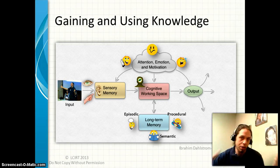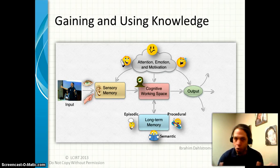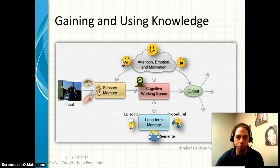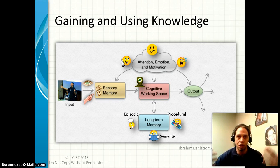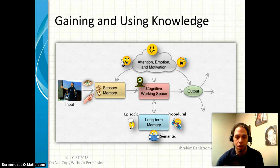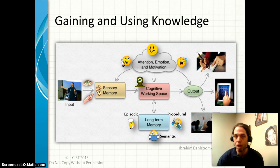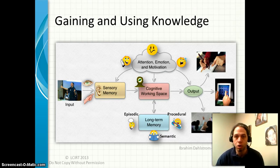Assuming we paid attention, our emotions were in check, and we were motivated — we moved information into our cognitive working space and worked on it long enough to form a long-term memory. When it comes to testing whether someone has learned, we're looking for an output. To produce an output, we have to go beyond forming that memory: we extract information from long-term memory, bring it back into our cognitive working space, act on it, and come up with an output — such as writing a paper, working on a mind map, or verbally presenting to the class.